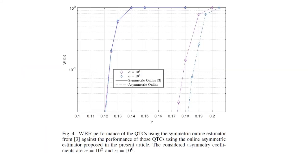We also compared the symmetric online estimator from our previous paper with the asymmetric online estimator proposed here. Running the symmetric estimator on asymmetric channels shows that it is unable to account for channel asymmetry — it always produces the performance of the depolarizing channel, regardless of the asymmetry applied to the error model. Consequently, there is a significant performance loss if the asymmetric online method is not used.